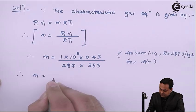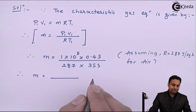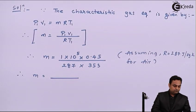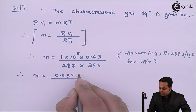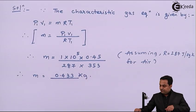This is the value of P1V1 for air, so therefore the answer of mass comes out to be 0.433 kg. That's the first answer.